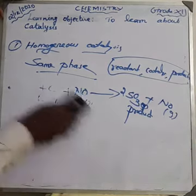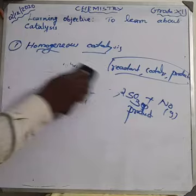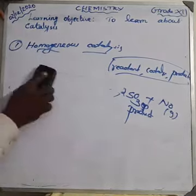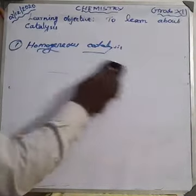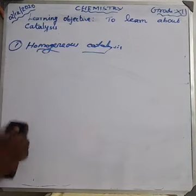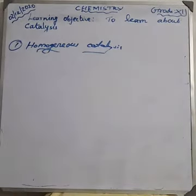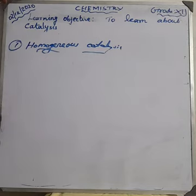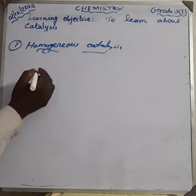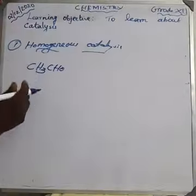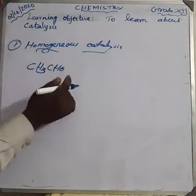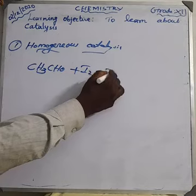As per our textbook, we have many examples and you should learn them all because they will ask in one-mark questions. For two-mark and three-mark questions, the definition and one example is enough. The next example is acetaldehyde — the formula for acetaldehyde is CH₃CHO.